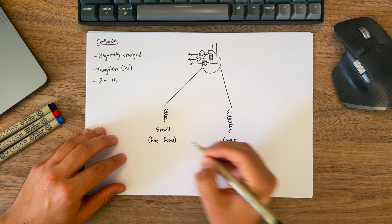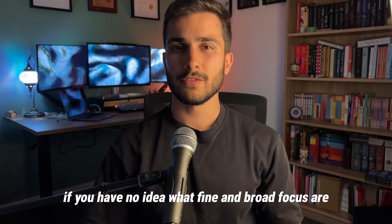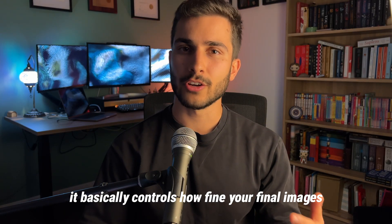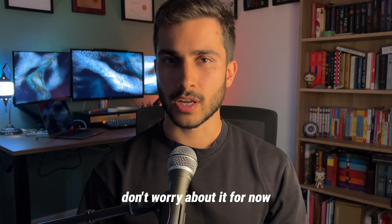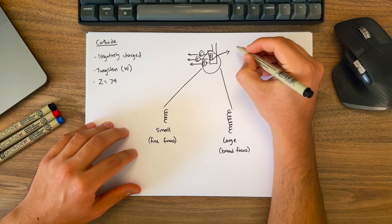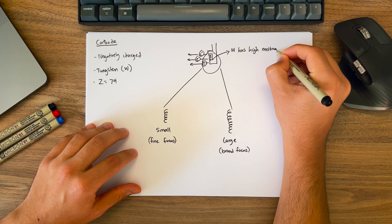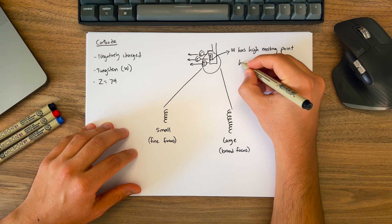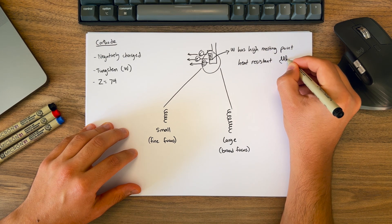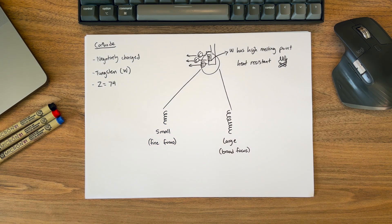The small one is used for the fine focus setting and the large one for the broad focus. If you have no idea what fine and broad focus are, it basically controls how fine your final image is — I'll make another video and link that below once it's ready. The material of the cathode is important because it's able to withstand the thermal stress of repeated heating cycles without significant evaporation or deformation of the filament, because it's strong enough to maintain its shape and size during x-ray production, which can get quite heated.